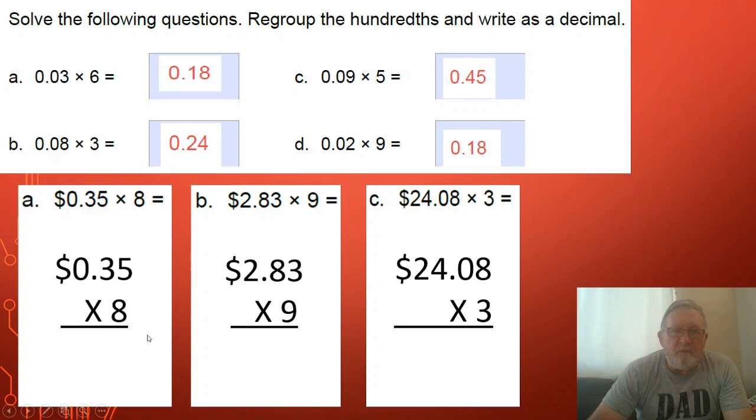If you look at A, you've got 35 cents times eight and I've set it out in vertical format. Let's have a look at the first one together. Five eighths or eight times five is 40. Put down the zero, carry the four. Then we multiply by the next place value, the three. Eight times three is 24 plus that four is 28.